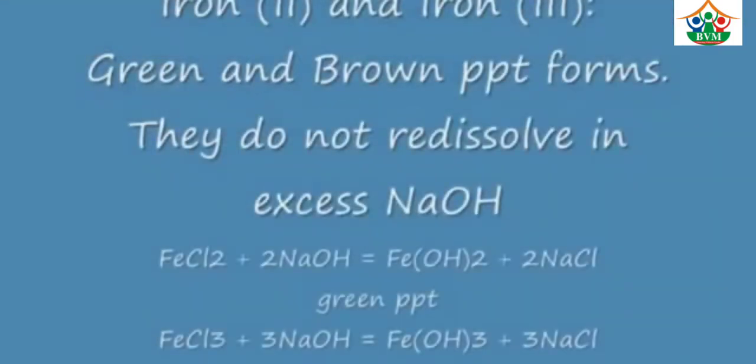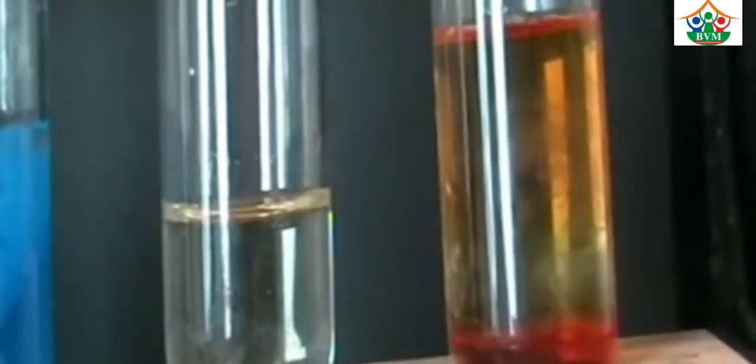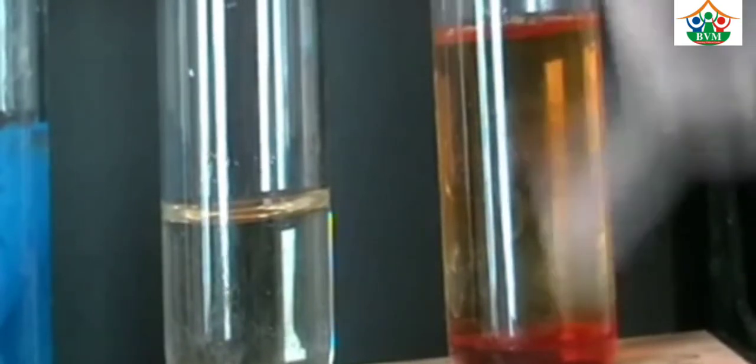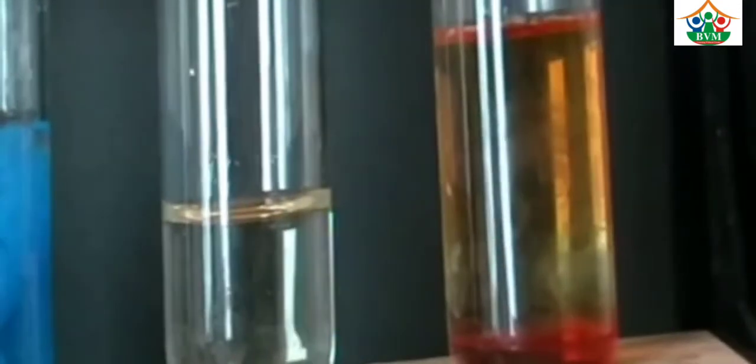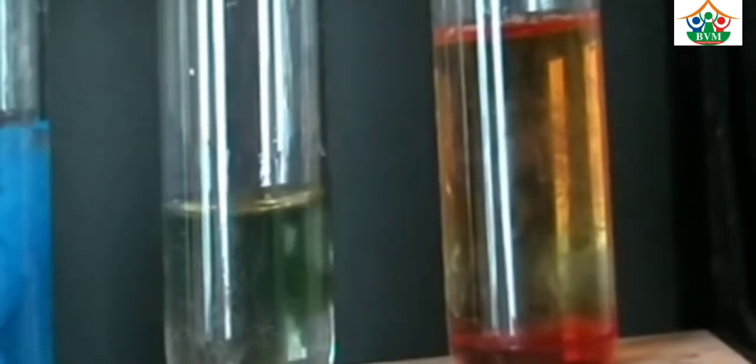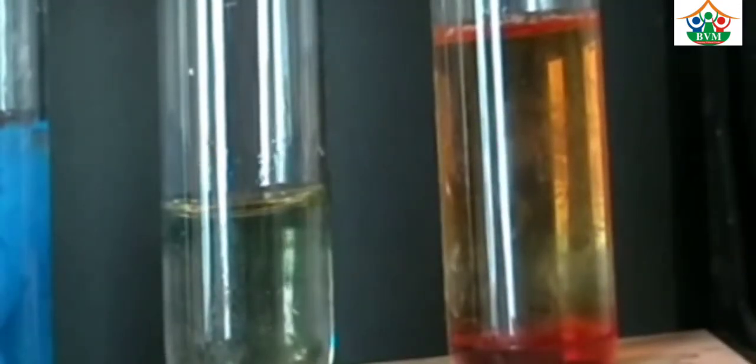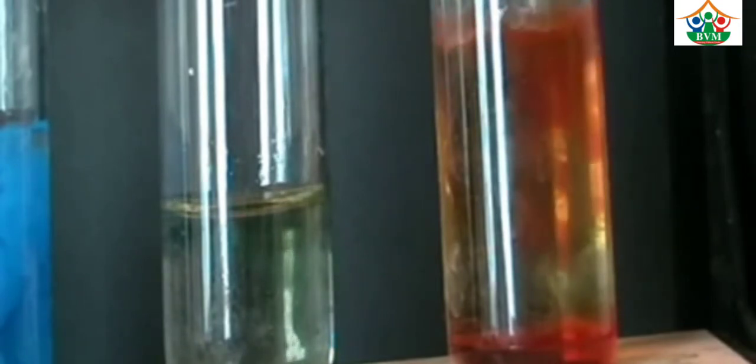Next one is iron two and iron three. Iron two has green color as shown in the test tube, and iron three has dark brown color. First, when you put sodium hydroxide in Fe²⁺ solution, a dirty green precipitate is formed.